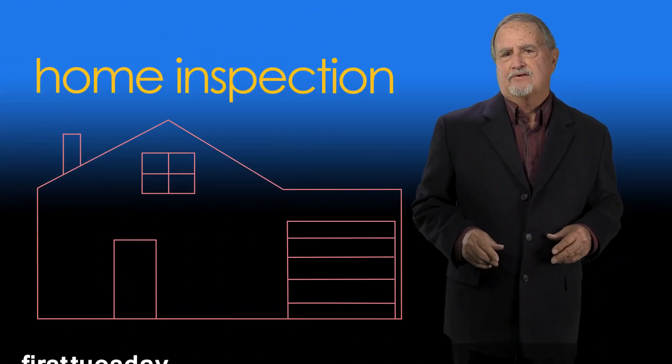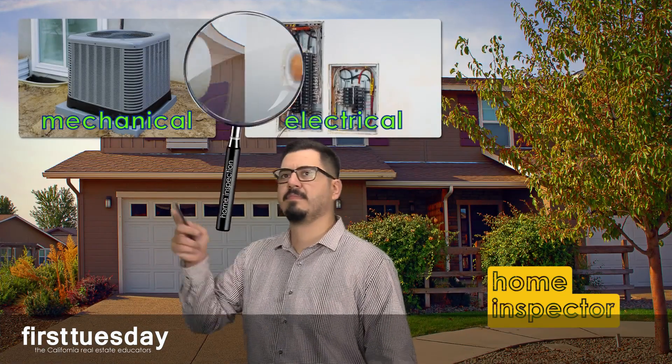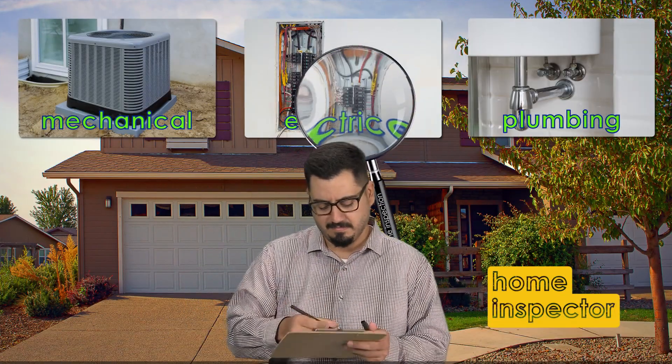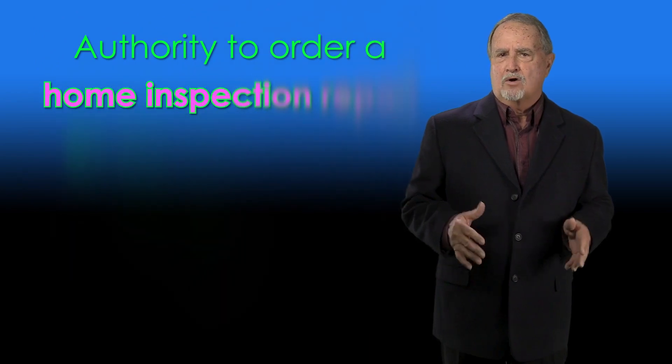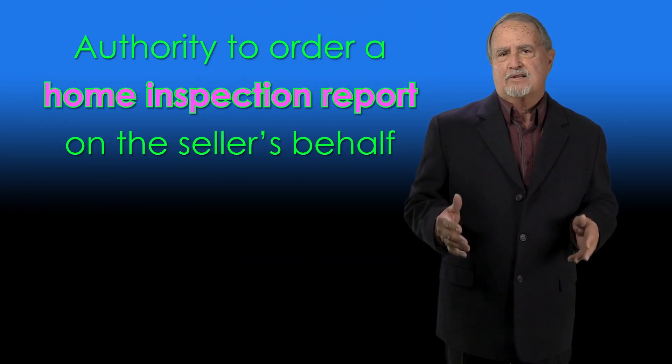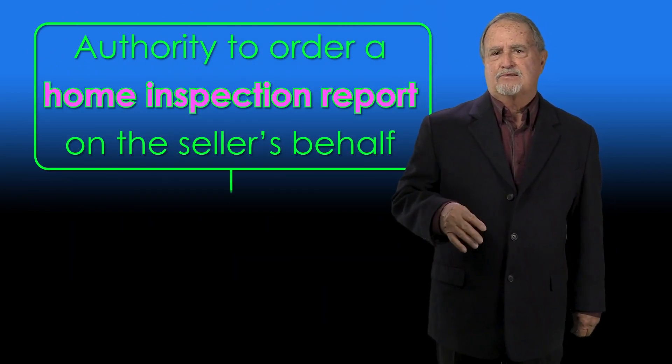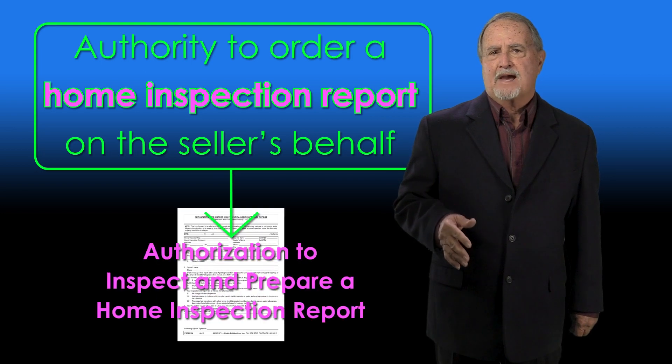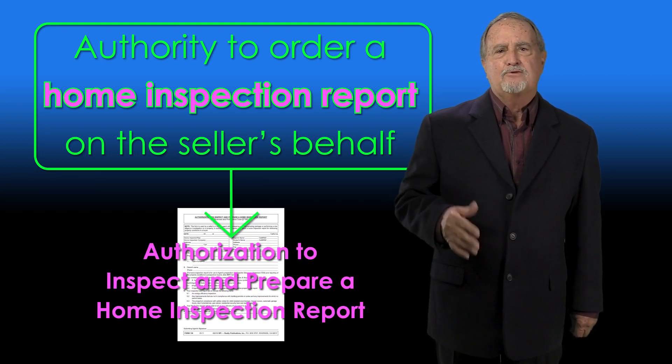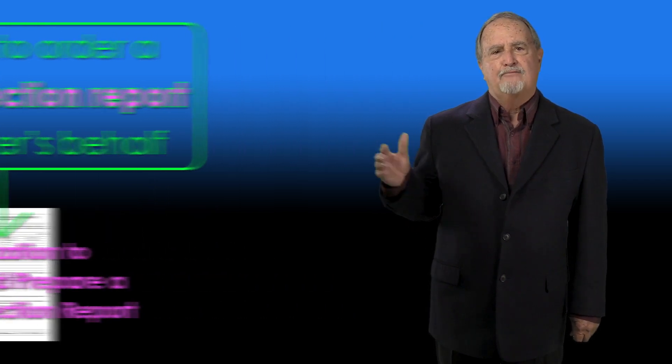A home inspection is a non-invasive examination of the mechanical, electrical, and plumbing systems of the dwelling, as well as the components of the structure. In the course of representing the seller of a one- to four-unit residential property, the seller's agent asks the seller to grant them authority to order a Home Inspection Report on the seller's behalf. This is done with an authorization to inspect and prepare a Home Inspection Report, RPI Form 130.